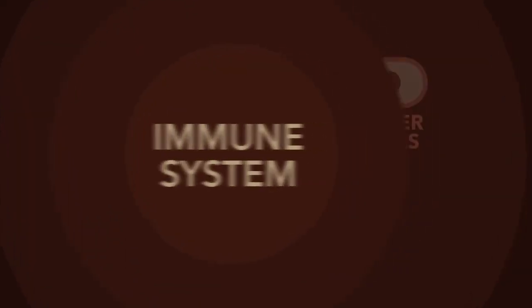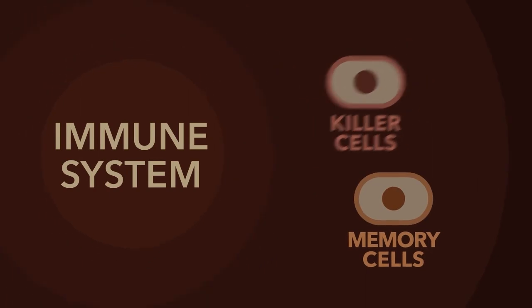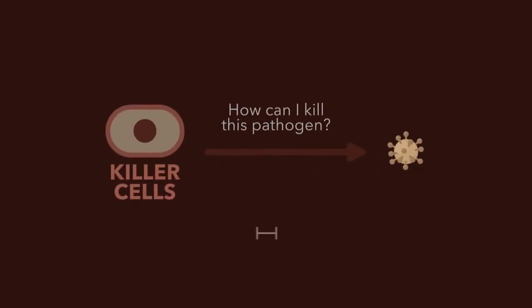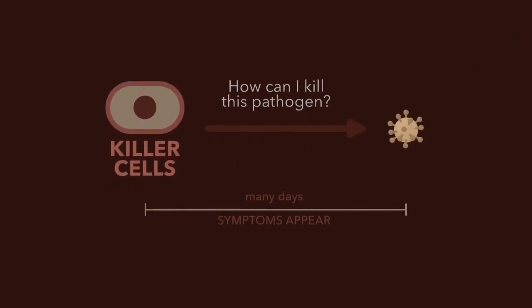Our immune system have killer cells and memory cells. Killer cells figure out how to kill new pathogens, while memory cells remember how it was done. Figuring out how a pathogen affects the body can take time, which is why symptoms appear.